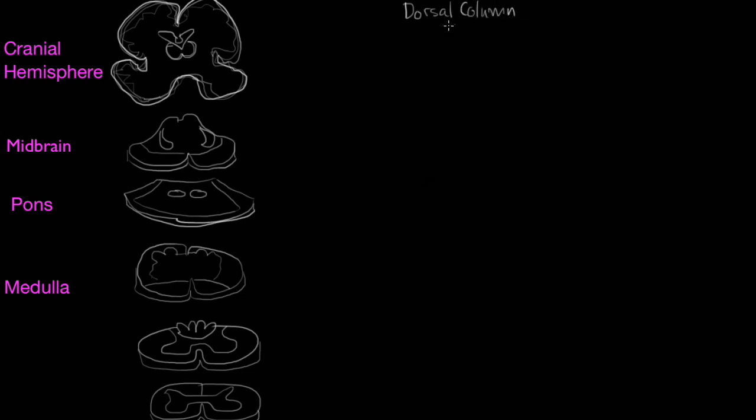So what is the dorsal column? The dorsal column is an ascending spinal tract, and it refers to this particular region of a spinal cord. So you've got the spinal cord over here, you've got this grey matter, this is the grey matter,